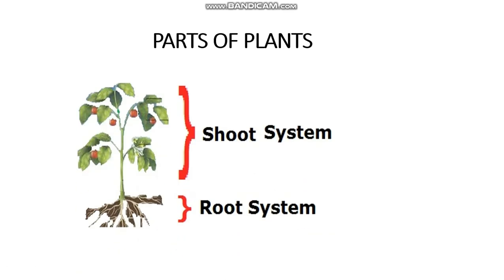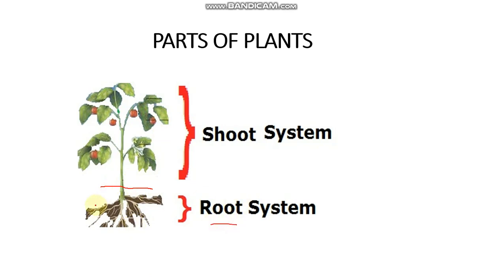Similarly, in plants also we have parts of plants. What you have to learn means, this is the parts of the plant. From this part to this part is the root system. And from here up, this is represented as the shoot system. What do you call it? Shoot system.